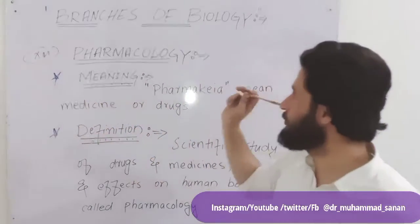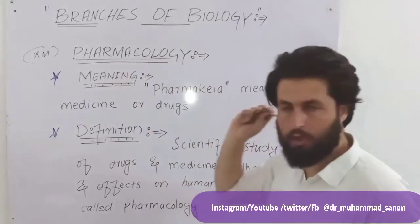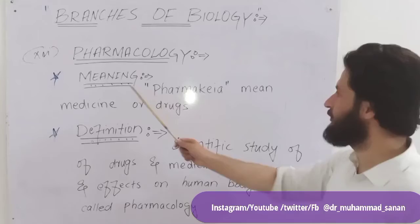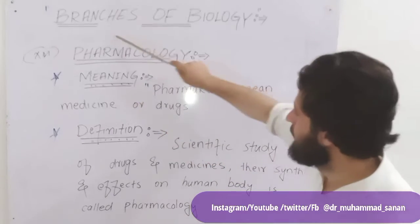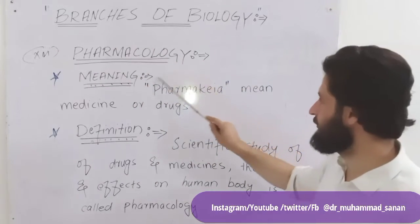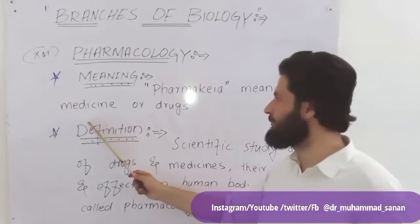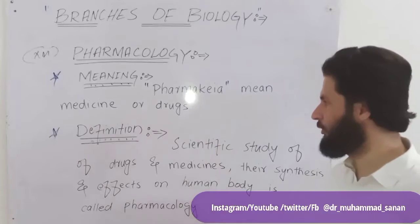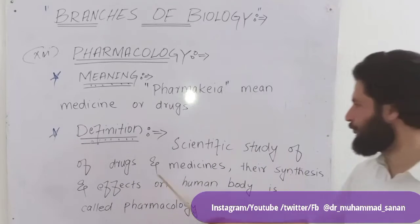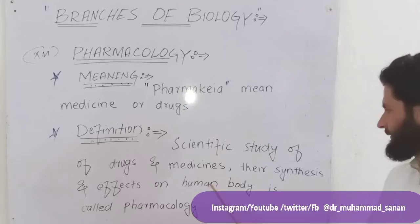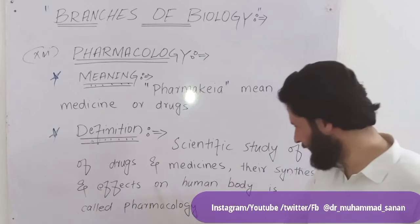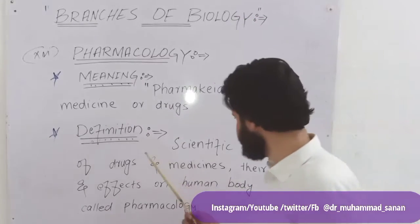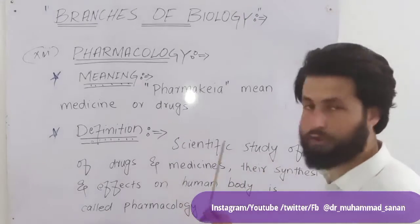This is the 16th and last branch of biology, known as pharmacology. The word pharmacology is derived from 'pharmacia,' which means medicine or drugs. The definition: pharmacology is the scientific study of drugs and medicines, their synthesis, and their effects on the human body.